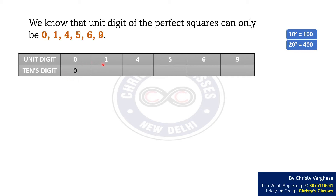Now, consider the case when the unit digit is 1. Consider 11² = 121 and 21² = 441. In both these cases, the unit digit is 1, and the tenth digits are 2 and 4. Which means that the tenth digit is even.